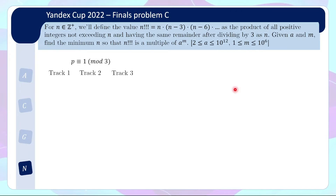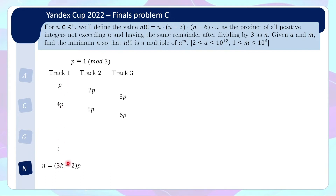The case where p is congruent to 1 mod 3 is then slightly trickier. You need to figure out where the p's appear across the various tracks so that for each track you know how to count the number of times p appears. Since p is congruent to 1 mod 3, p appears in track 1, 2p appears in track 2, 3p appears in track 3, then 4p, 5p, 6p, and so on. Focusing on track 1, you binary search on k, where n = (3k - 2) × p, and you need to find how many copies of p appear there.